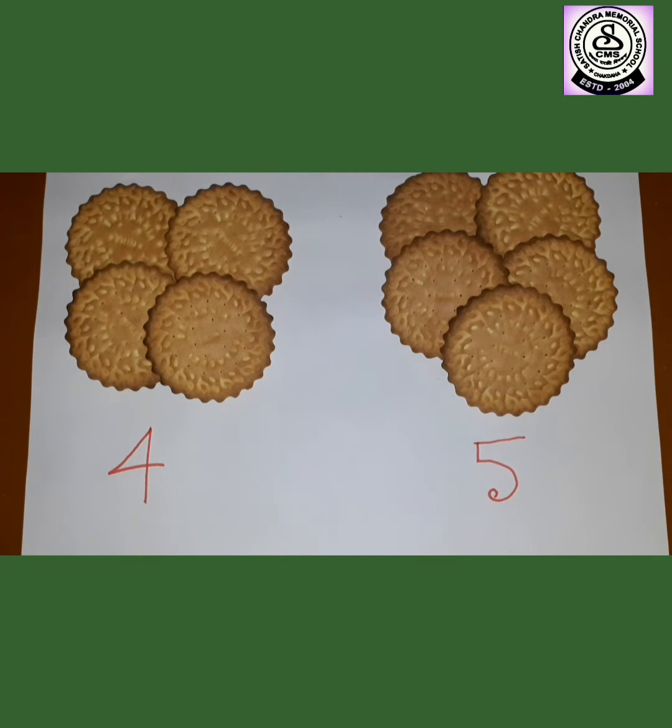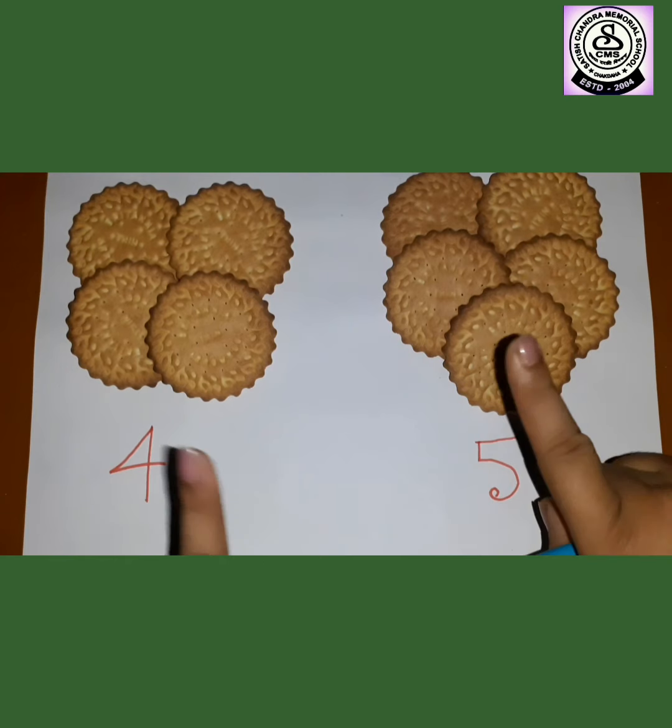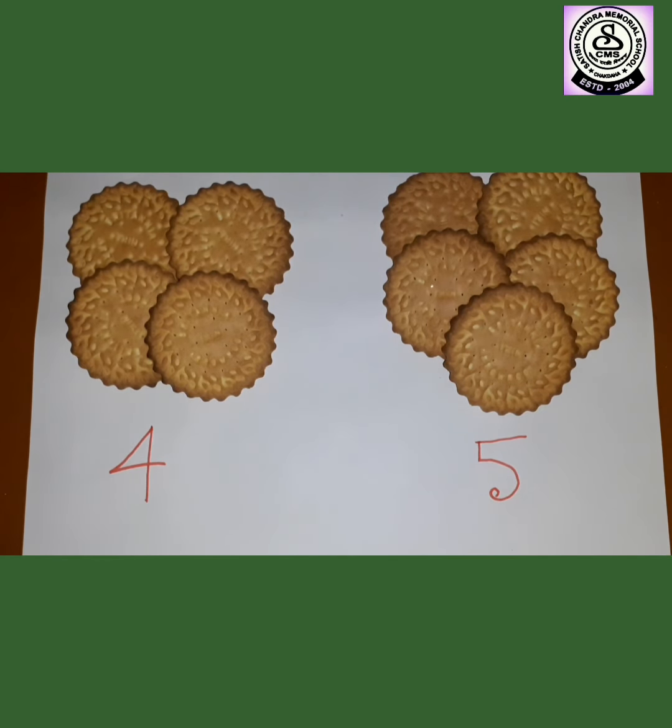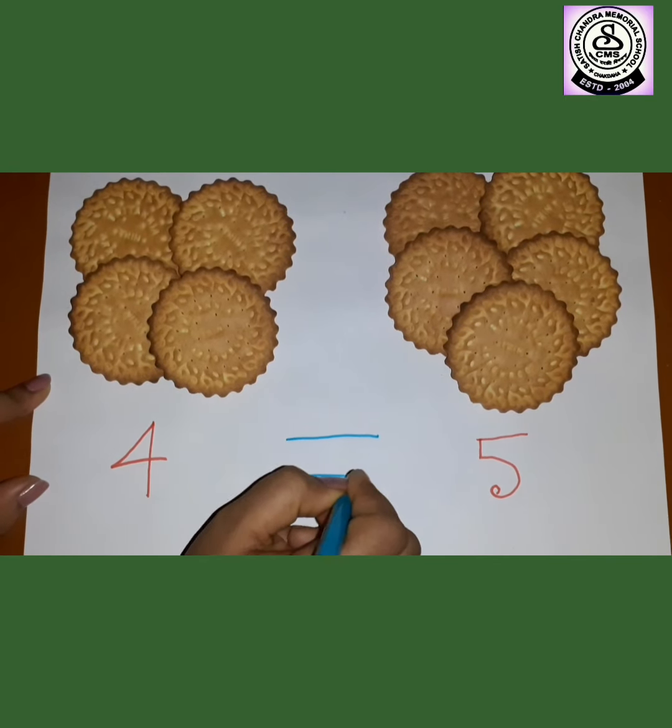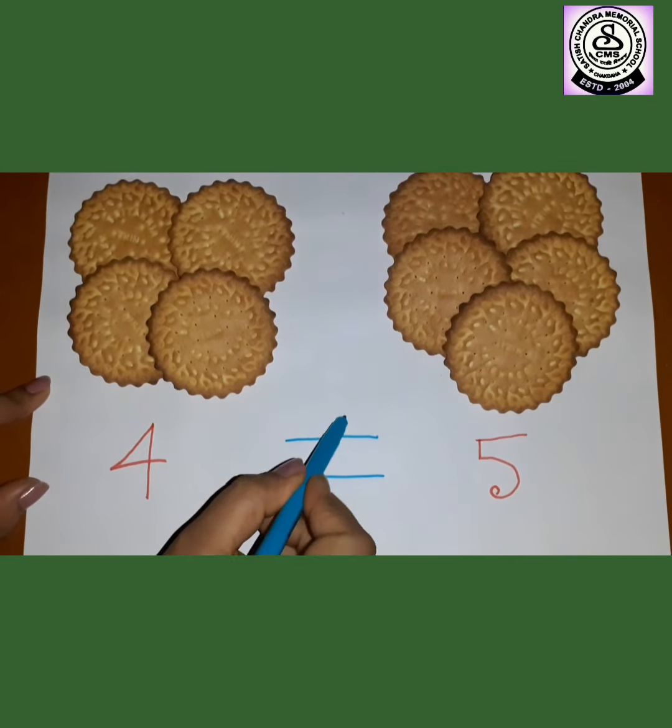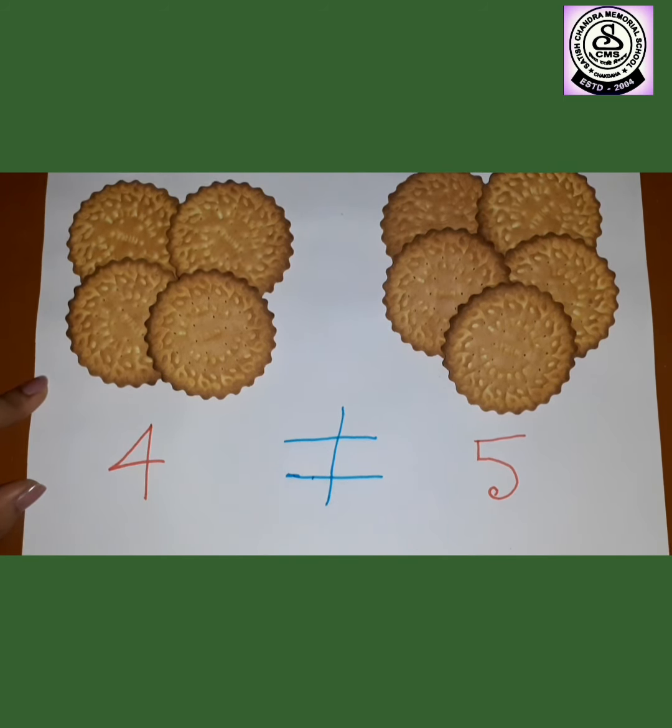So that means they are not equal. They are not same. This 4 here and 5 here are not same. So that is why we will use the not equal sign. This is called not equal to. This is 2 lines and 1 slanting line. That will give us 1 not equal to sign.